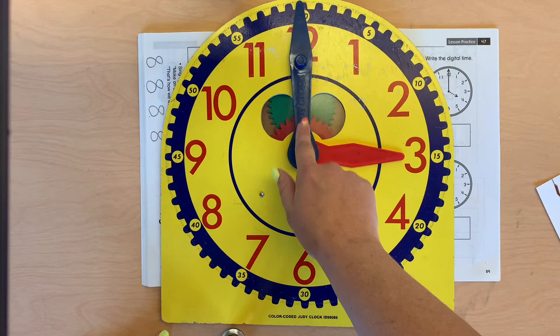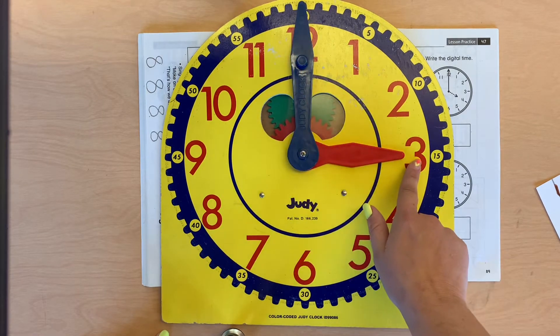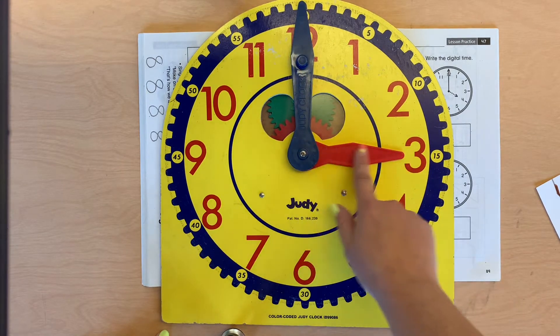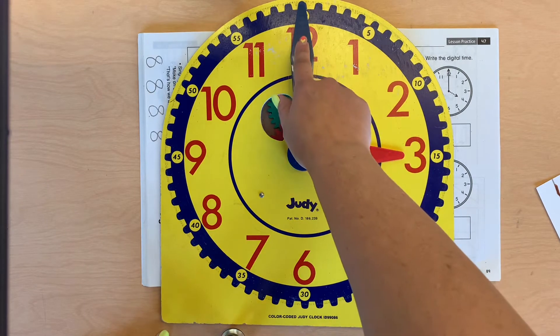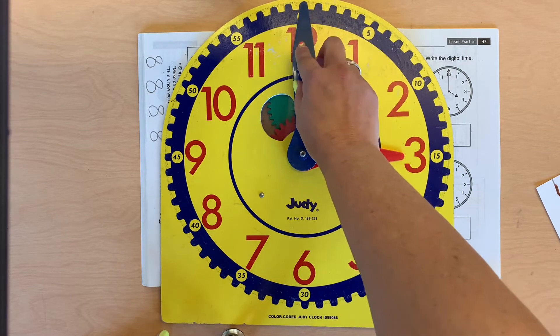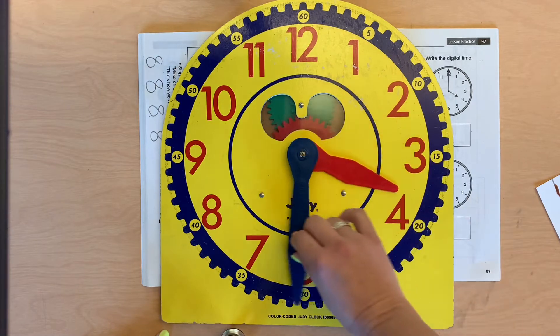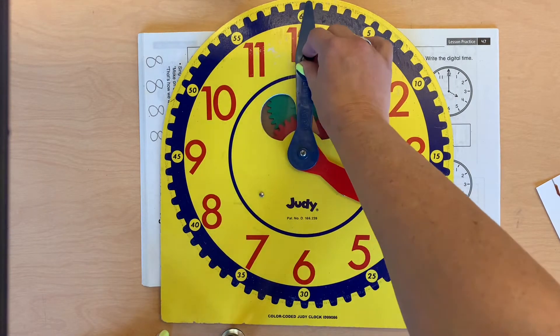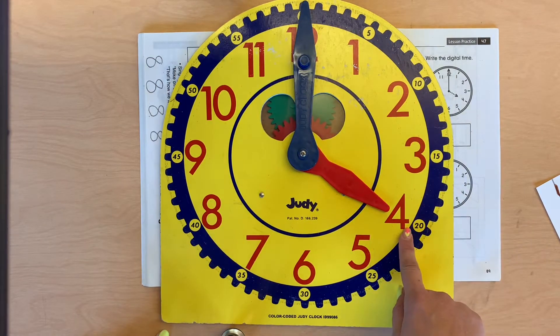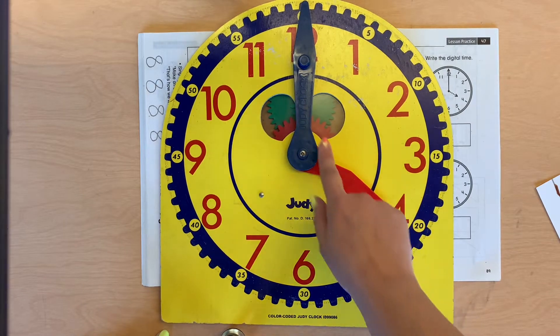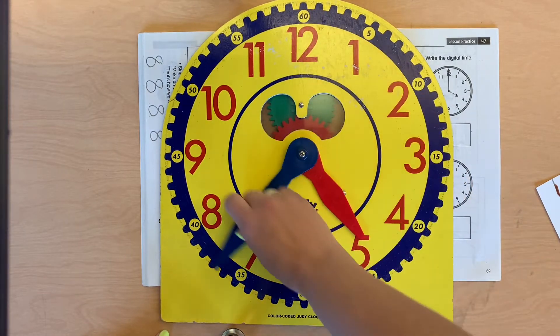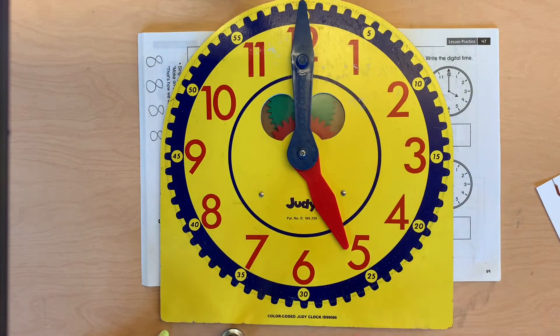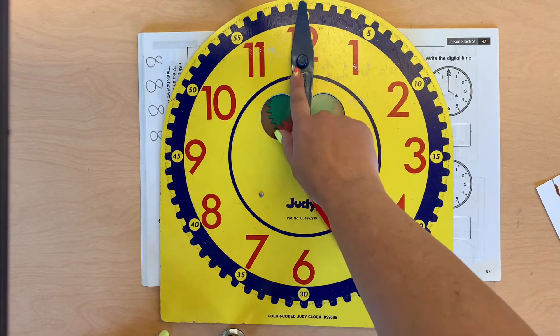When the minute hand is pointing at the 12, the hour hand tells us the time. So it's going to be 3, and then we say o'clock when it's pointing at the 12. If I were to turn our time, now it would be 4 o'clock. Now it would be 5 o'clock. It's pointing at the 12.